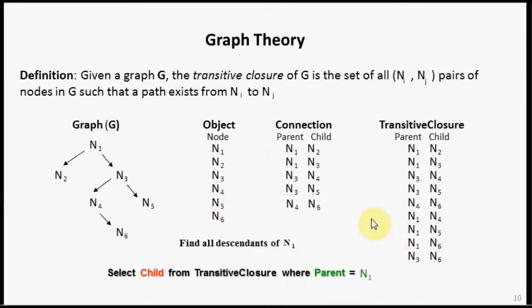So what can you do with the transitive closure of a graph? You can use it to navigate a graph. So if we want to know all of the descendants of N1, what we can do is write a select statement as follows. Select child from transitive closure where parent equal N1.